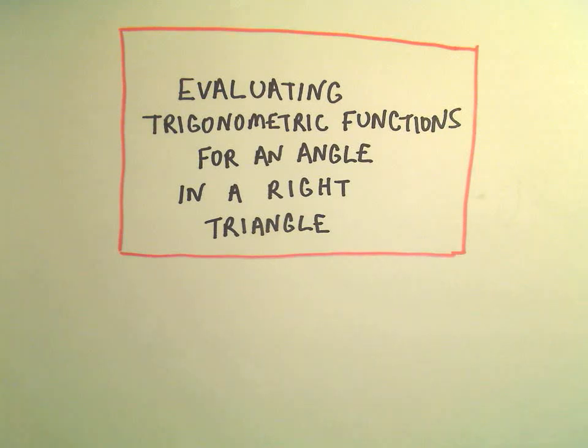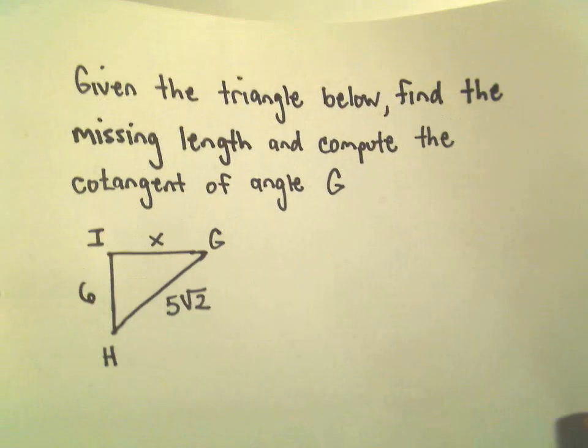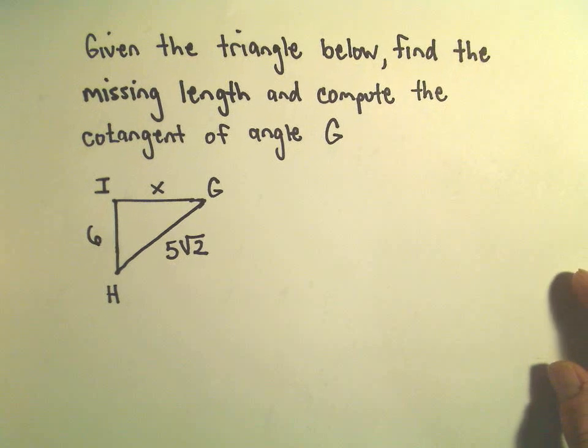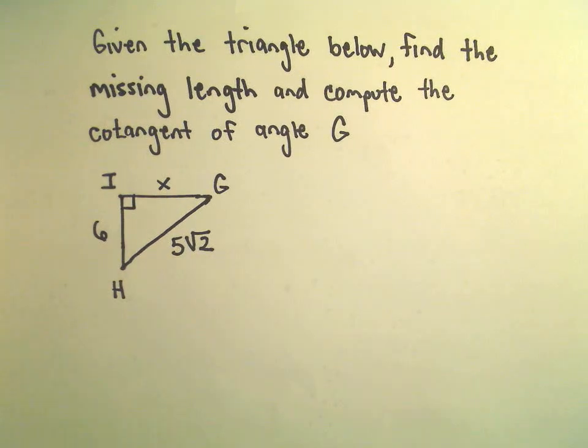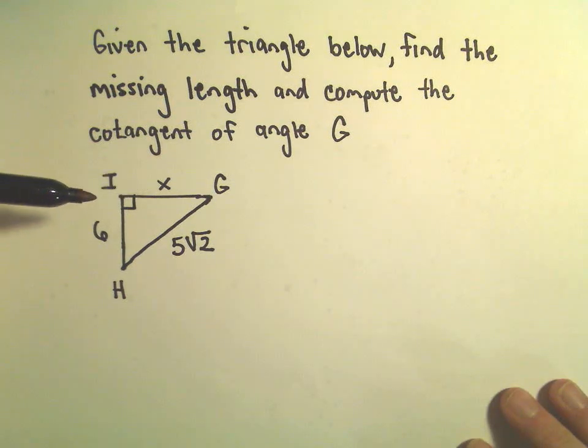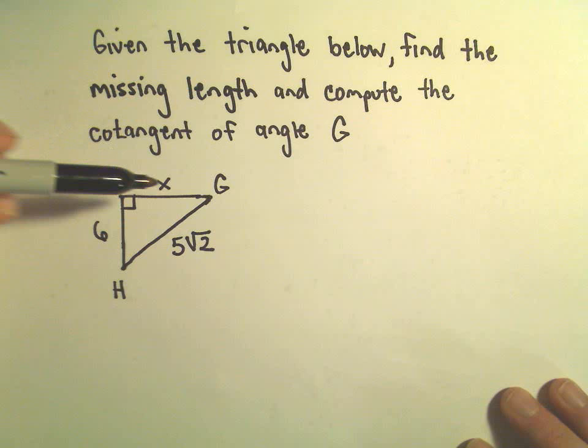All right, so just another example here of basically finding a value of one of the trig functions. So here we've got a little right triangle. Now it's a right triangle. And we don't know this missing length x, but we want to figure that out because we want to figure out what the cotangent of this angle C is.